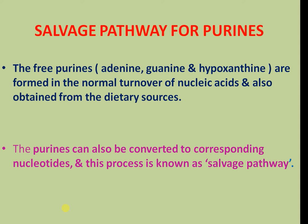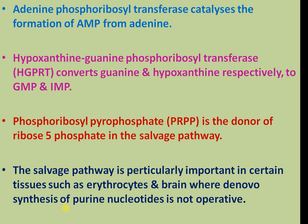Free purines — adenine, guanine, and hypoxanthine — are formed in normal turnover of nucleic acids and can also be obtained from the diet. Purines can be converted to corresponding nucleotides through the salvage pathway. Adenine phosphoribosyl transferase catalyzes the formation of adenosine monophosphate from adenine. Hypoxanthine-guanine phosphoribosyl transferase (HGPRT) converts guanine and hypoxanthine to guanosine monophosphate and IMP respectively. The salvage pathway is particularly important in certain tissues such as erythrocytes and brain where the de novo purine nucleotide synthesis is not operative.